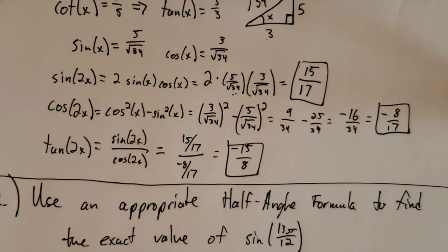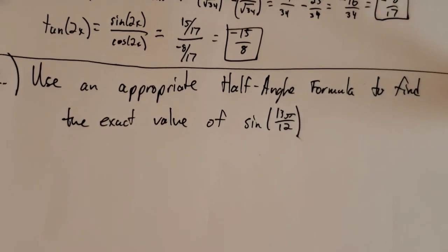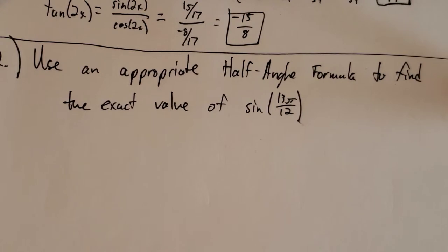So we're going to move on and do problem two here, which says to use an appropriate half-angle formula to find the exact value of sine of 13 pi over 12. We don't know the exact value of sine of 13 pi over 12 normally. We know exact values of sine of things like pi over 6, 0, pi over 4, pi over 3, pi over 2, and then et cetera around the unit circle. But in this particular case, using the half-angle formula, we can actually find the sine of 13 pi over 12.